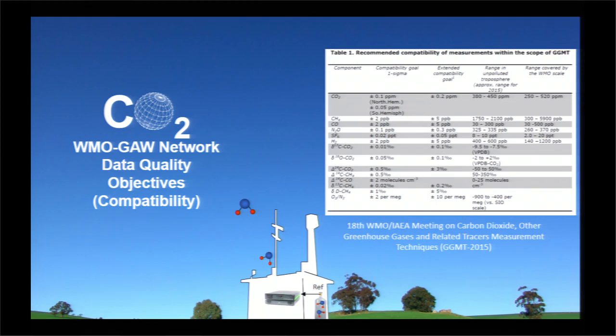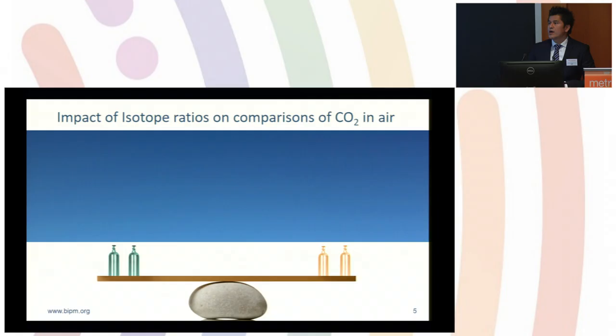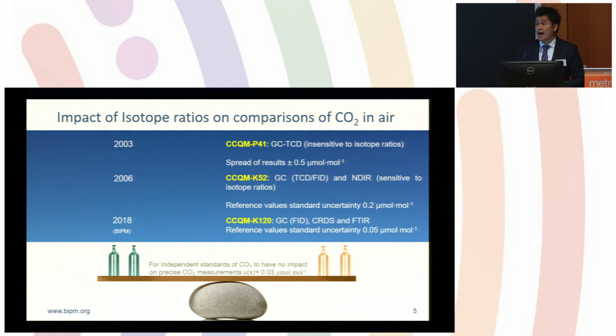But how well do we need to measure CO2? That's an important thing. And how well locally and how well globally? There are these global systems that need to measure with an uncertainty of 0.1 micromole per mole in the northern hemisphere. And what is the contribution of the Gas Analysis Working Group during the last year to these efforts? Well, the Gas Analysis Working Group has been working very hard to underpin WMO efforts and other networks.